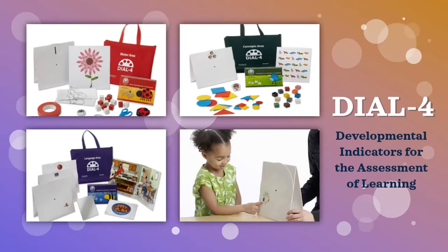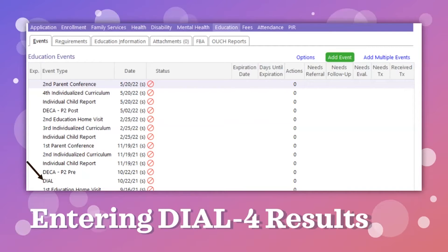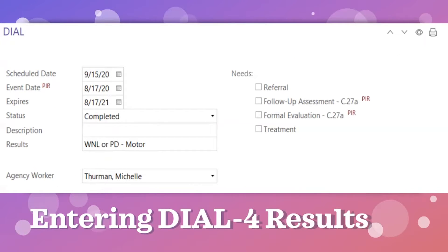The DIAL-4 is the screening tool we use to measure motor concepts and language development. These sections are performance-based and designed to identify young children in need of further diagnostic assessment, and is appropriate for children ages 2 years 6 months through 5 years 11 months. The DIAL generally takes about 30 to 45 minutes to complete and is available in both English and Spanish. Like the DECA P2, the DIAL results are entered into an event in the education section. The page that opens is the same, except it does not have a section below to enter the scores — that is done on a different screen. Be sure to enter the date the event took place, which is when the screening was completed.